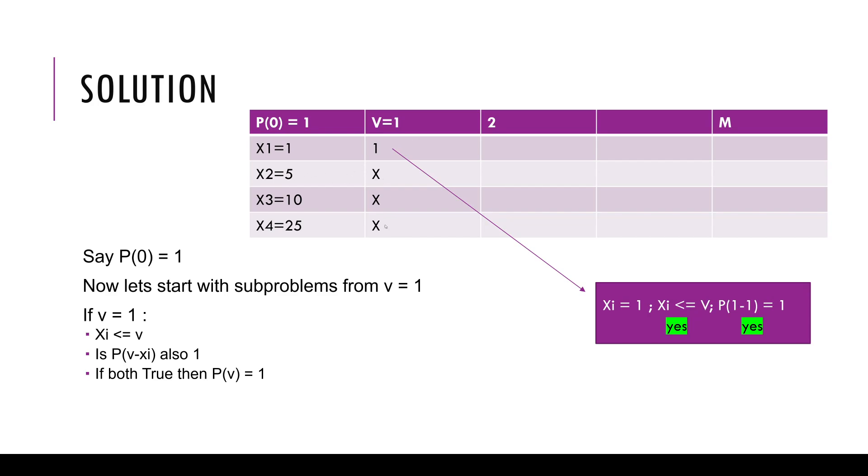Now all the remaining are 0 because the value of the coin is larger than the value we are trying to achieve. If any of these in this column becomes a 1, then you put P(v) equals 1. So P(1) equals 1 because I was able to make this value using any coin here. I don't care how, but if any of these was 1, this becomes 1.